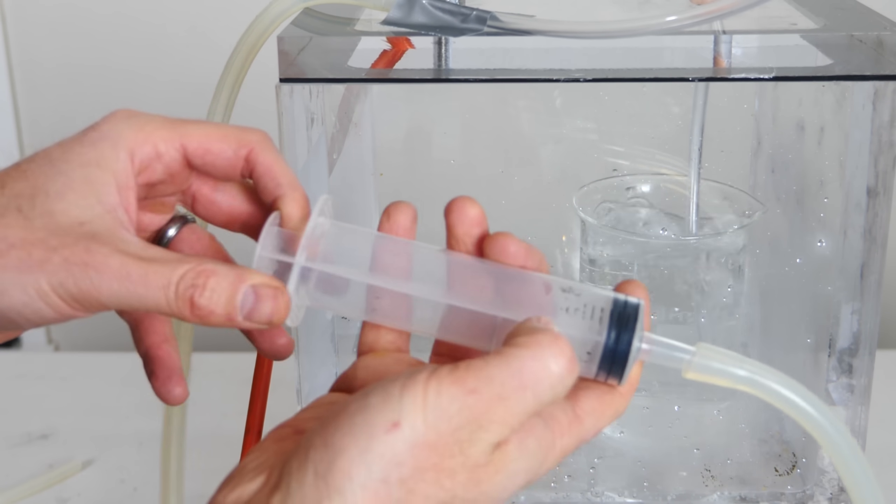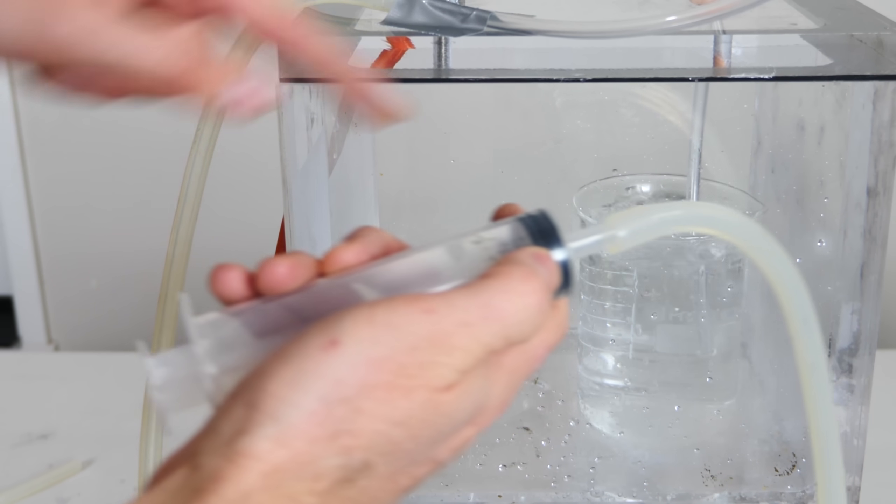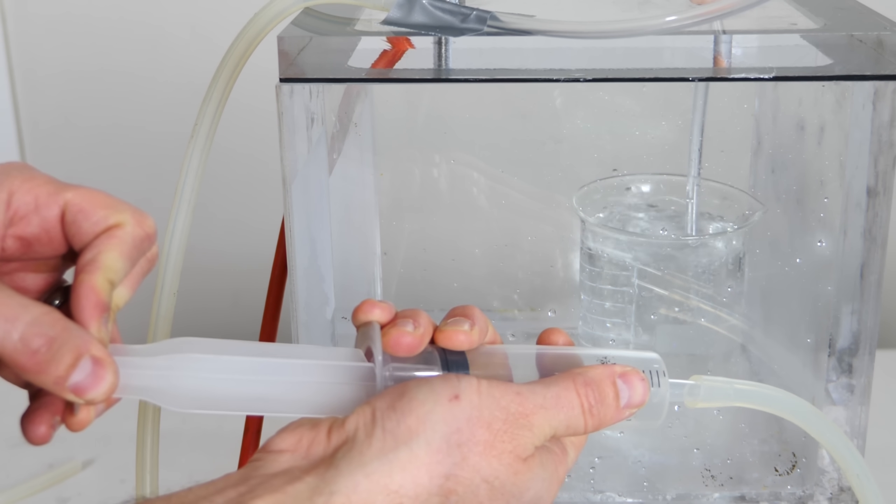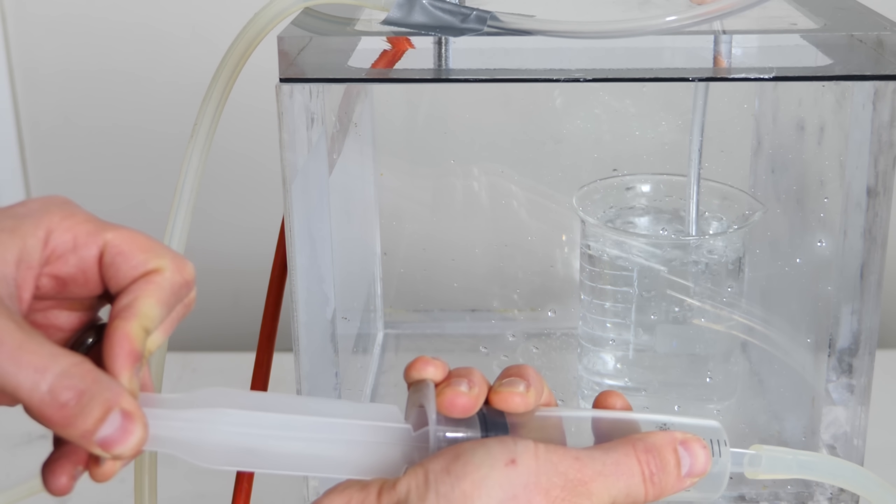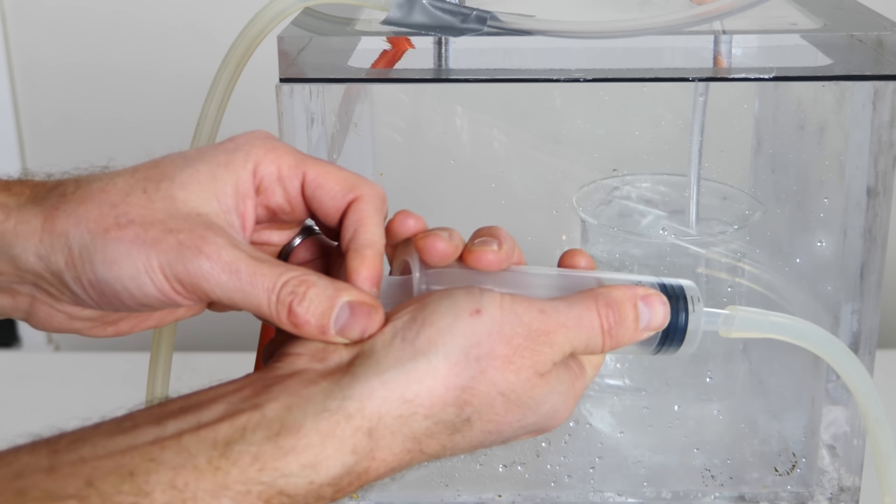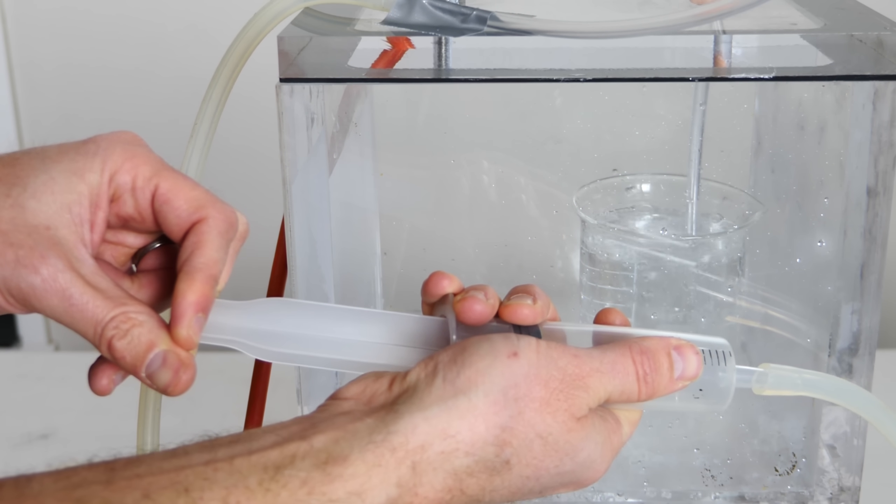Okay so this is a 50 milliliter syringe so I should be able to suck water all the way up with this volume. But look what happens. I can't get it. So no matter what I do I can't suck the water up the tube.